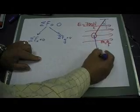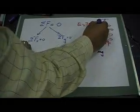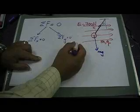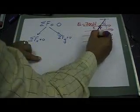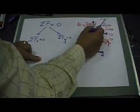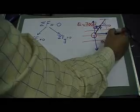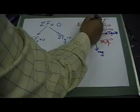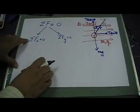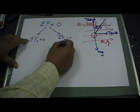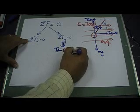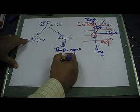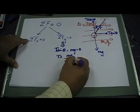Looking at the diagram, I have mg pointing down and then I have the tension going out of the mass. If I resolve the tension T, I have an x-component and a y-component, and this angle is theta. So T sine theta is the x-component and T cosine theta is the y-component. The sum of the forces along y gives us T sine theta minus mg equals zero.